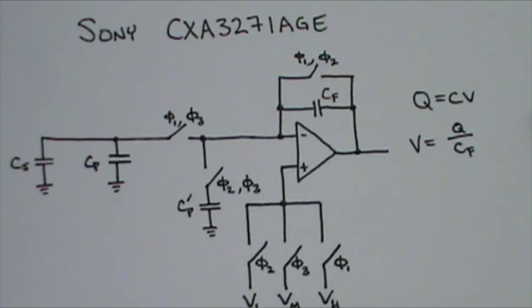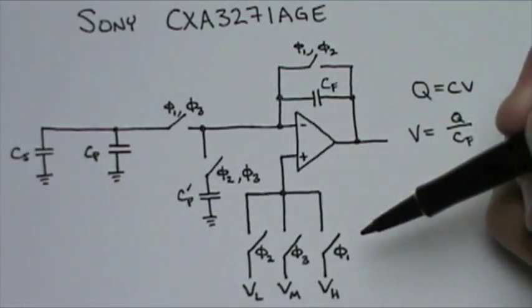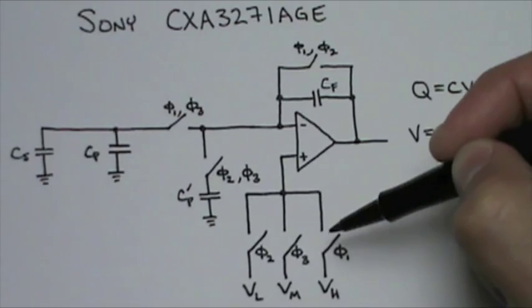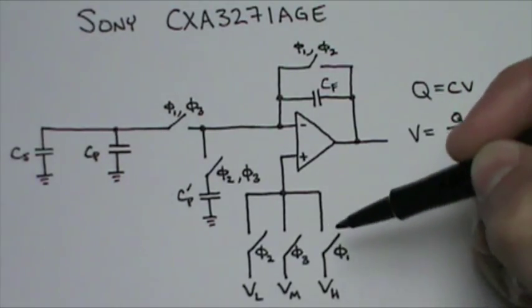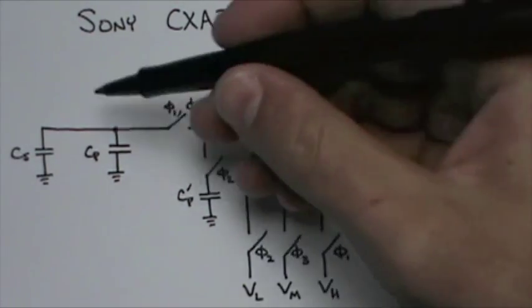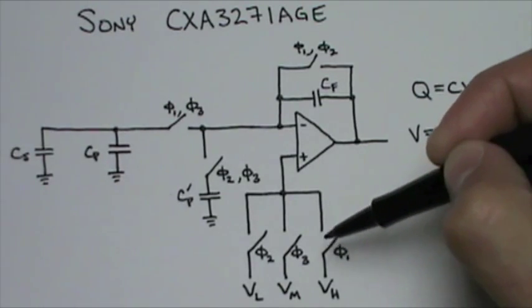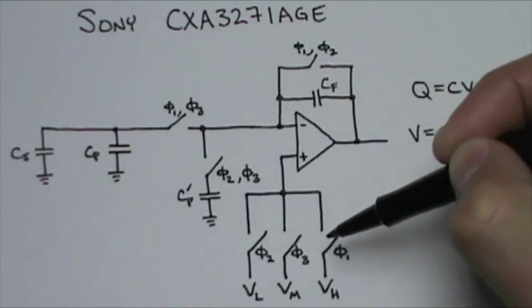How much charge is going to be stored on our sensed capacitor? The charge Q stored on the sensed capacitor is going to depend on the difference between the voltage VH and VM. Why? During phase 1, the capacitance CS was charged to VH by the op amp behaving as a buffer.